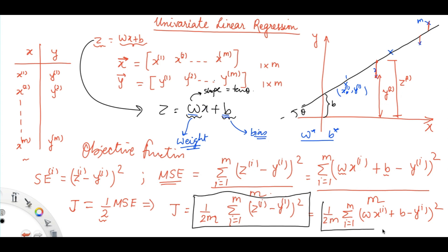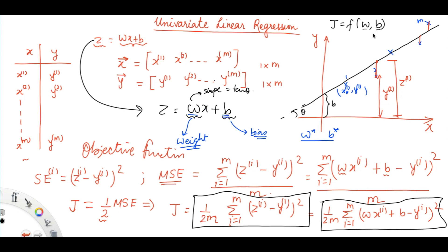We can also see that J is a function of W and B. We need to find the gradient del J over del W and del J over del B in order to update W and B using gradient descent. In the next video, we will see how to write the equations for the gradient in order to update W and B using gradient descent. Hope you understand it — thank you very much.